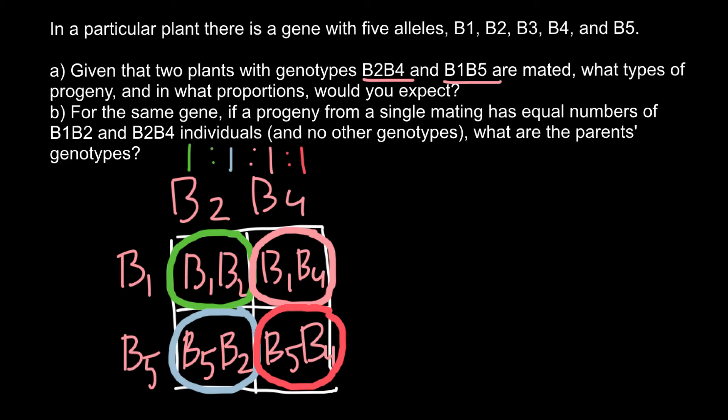As you see, we have B2 allele here in one genotype and B2 allele in the second genotype of the progeny. That gives us information that the genotype of one parent would be B2B2, and the genotype of the second parent would be B1B4.